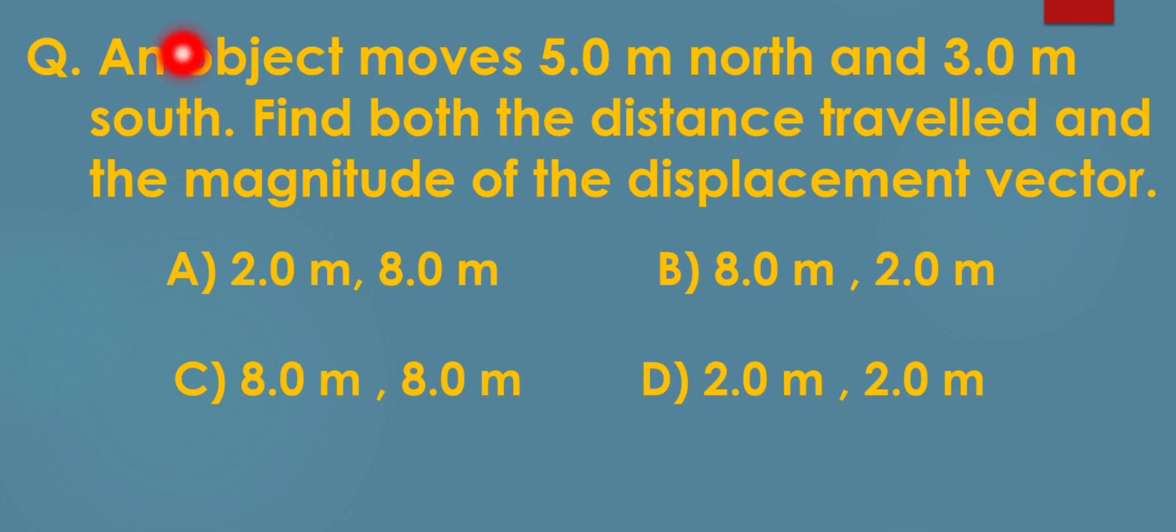An object moves 5m north and 3m south. Find both the distance traveled and the magnitude of the displacement vector. Option A: 2.0m, 8.0m.